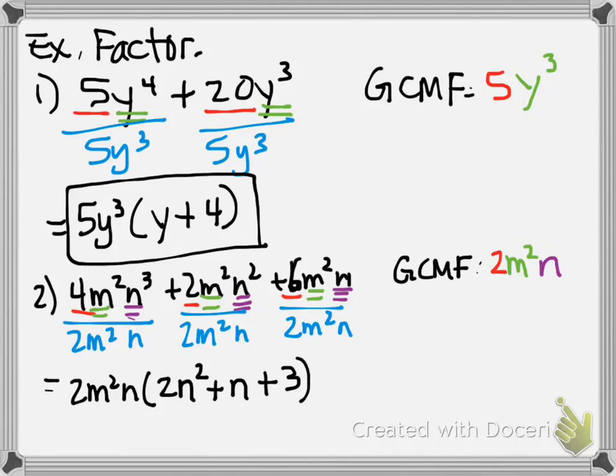Now what you notice is that you have a trinomial that's left behind. So sometimes we're going to have binomials left behind, sometimes trinomials left behind, but here's how I know how many terms are going to be in my parentheses. How many terms did I begin with? 3. I had 3 terms to begin with, therefore I'm going to have 3 terms in the remainder, just like in the top one I had 2 terms to begin with, so I had 2 terms in my remainder. But don't forget that GCMF is part of the answer.